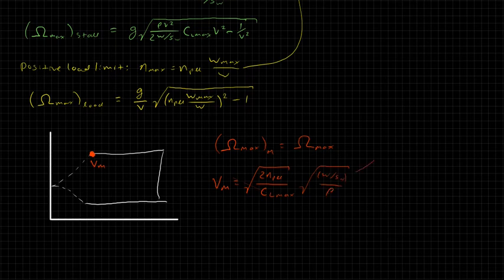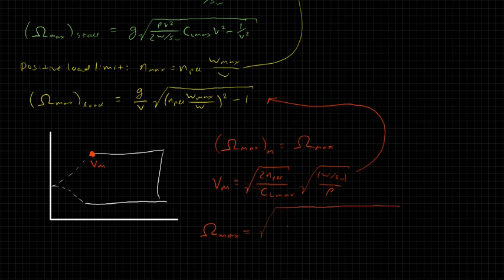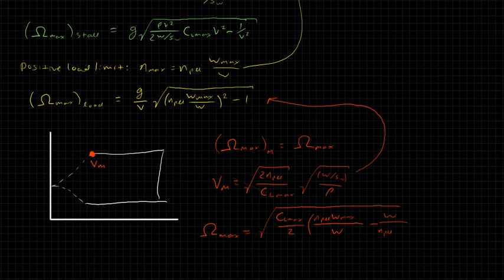So let's just write down as a review, our maneuver velocity is the square root of 2N PLL divided by CL max times the square root of W over SW divided by rho. So if we plug this guy, say, into here, you can do either one. It doesn't really matter.